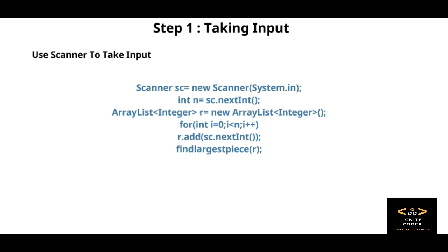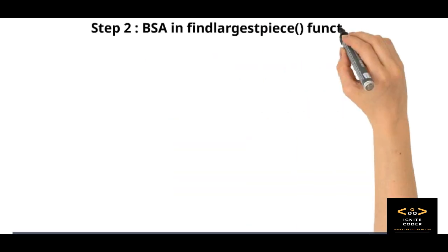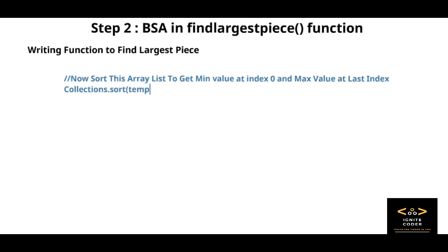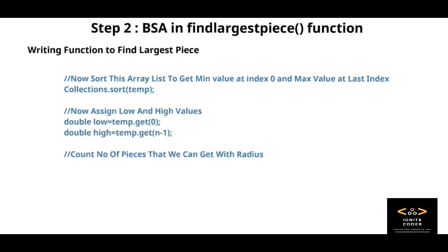Now we have to write the function for findLargestPiece. In binary search, all we need is low and high value and calculate the mid value. We keep on breaking until we get the final value where low or high equals mid. We will take up to four decimals of mid value. First, to get the high and low value, we sort the ArrayList. After sorting, obviously the first element would be lowest value and the last element would be the highest value.